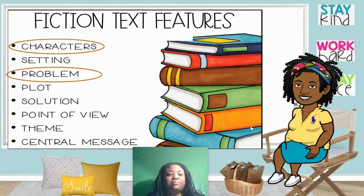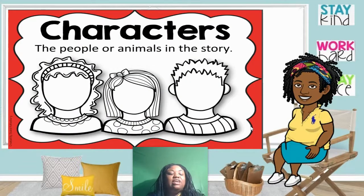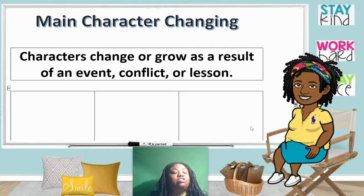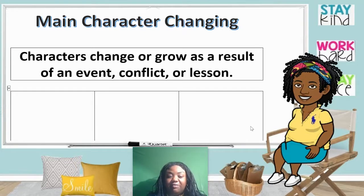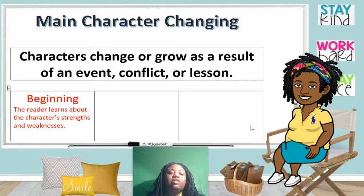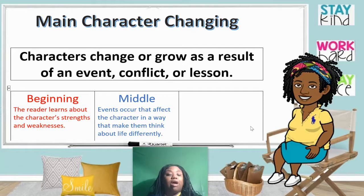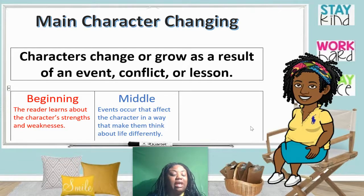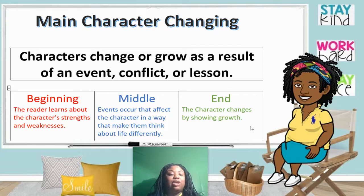Say characters. Say problem. Characters are the people or animals in the story. Sometimes in a story, the main character changes. Characters change or grow as a result of an event, a conflict, or a lesson, just like you and I in our real lives. At the beginning of the story, the reader learns about the character's strengths and weaknesses. In the middle, normally where the problem or conflict occurs, events affect the character in a way that makes them think about life differently. And in the end, the character changes by showing growth and some kind of maturity.